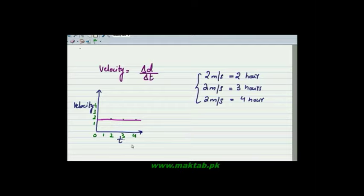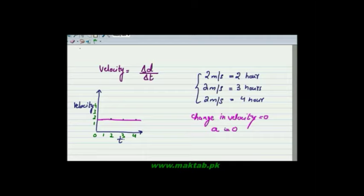In this graph, the change in velocity is zero. That means the acceleration is zero. Our body is constantly traveling at this velocity — it is not changing.